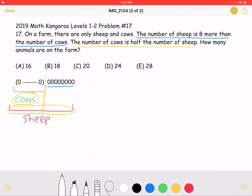If half of it is the cows, that means that the 8 is the other half, which also means that there must be 8 cows, because one half is the cows and the other half is the 8.